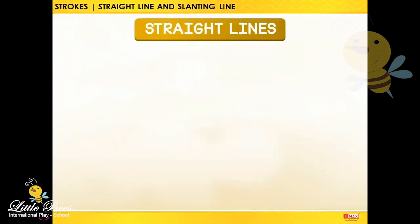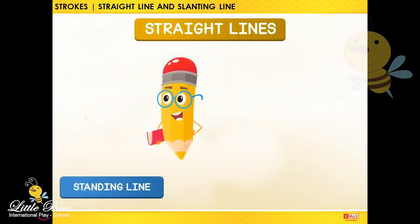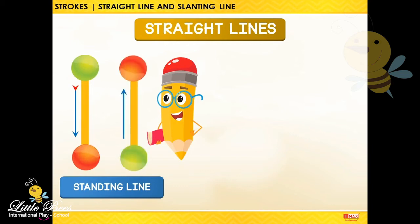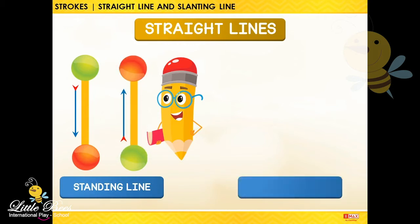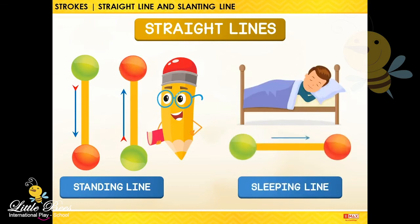Straight lines. A straight line can be a standing line that we draw from top to bottom or bottom to top. A straight line can also be a sleeping line that is drawn from left to right.